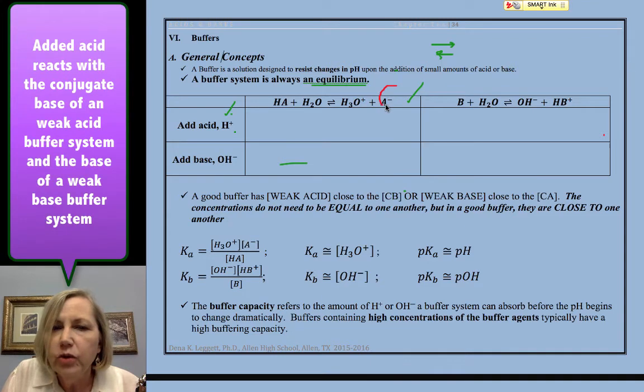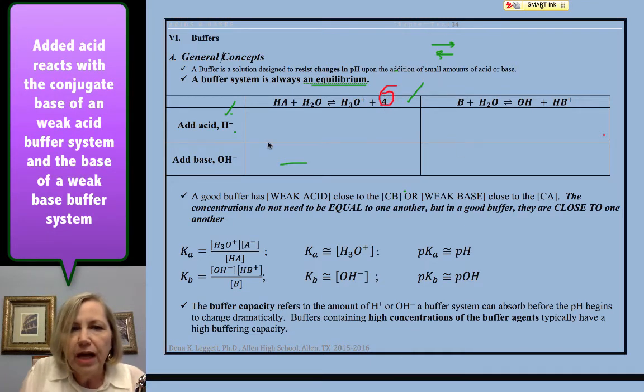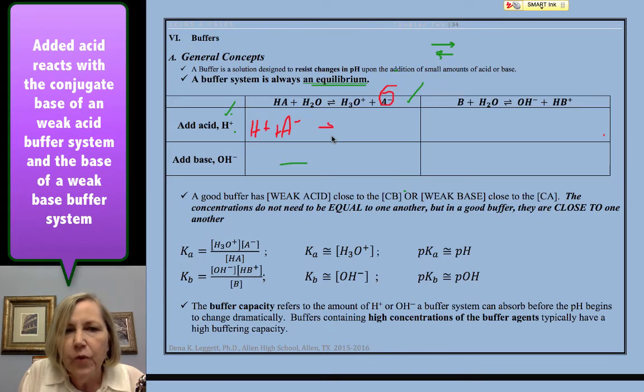So we want to find the base. So the H+ will react with A- to form HA. That should be a single arrow to form HA.